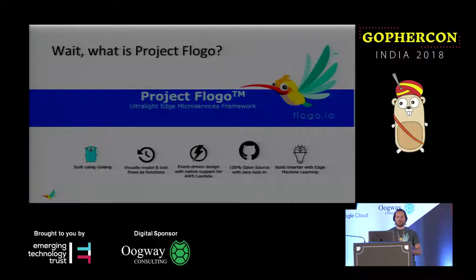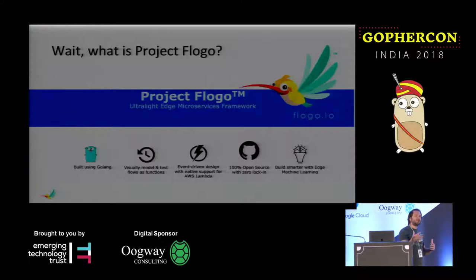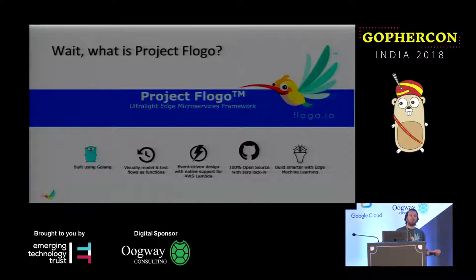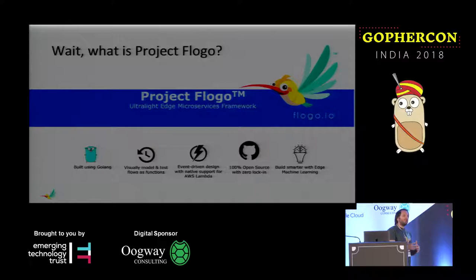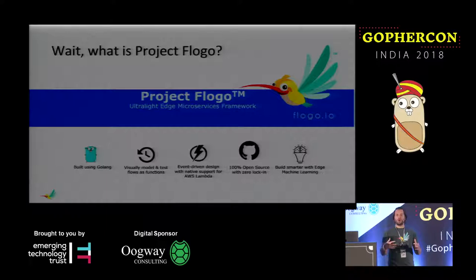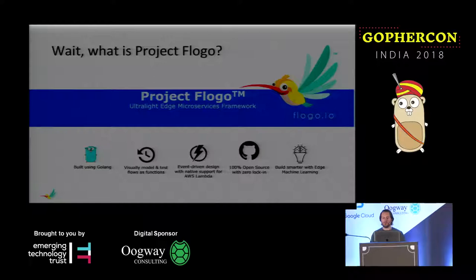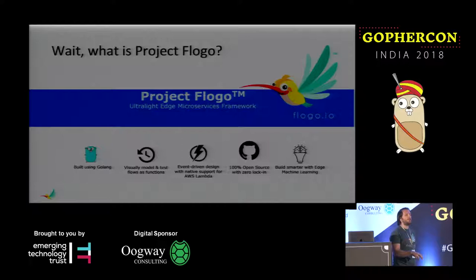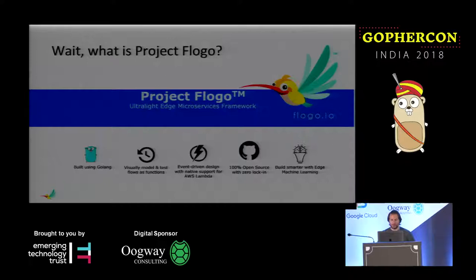So we chose Go as the language for FloGo. We built a domain-specific model, which allowed us to abstract application development away from just coding itself. We also built a visual development environment, so you can visually model and articulate your microservices within the FloGo UI. FloGo is an event-driven framework — all the concepts and constructs are event-driven. Last October, we launched support for running within AWS Lambda, with all the tooling to compile FloGo flows as functions and push them into Lambda. It's 100% open source, and we've also baked in TensorFlow so you can leverage TensorFlow capabilities within your microservices.